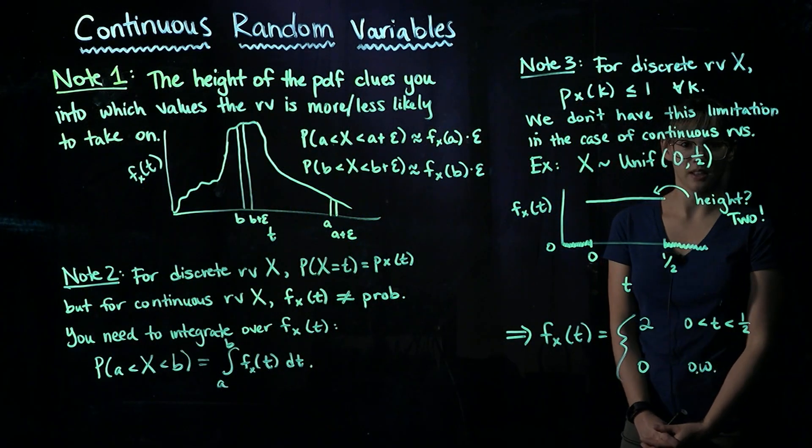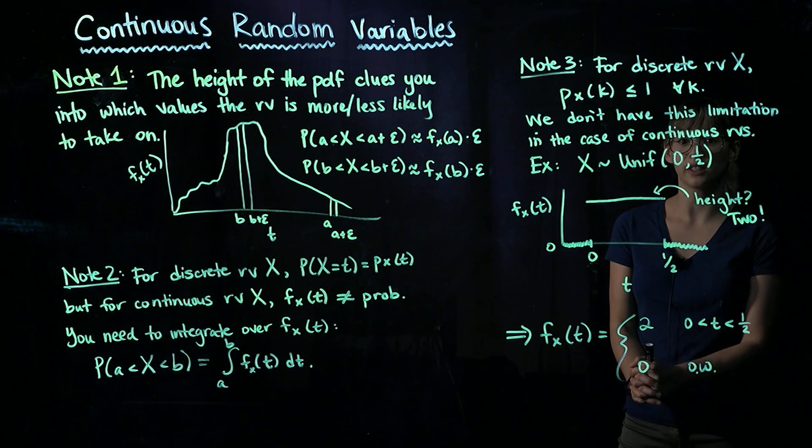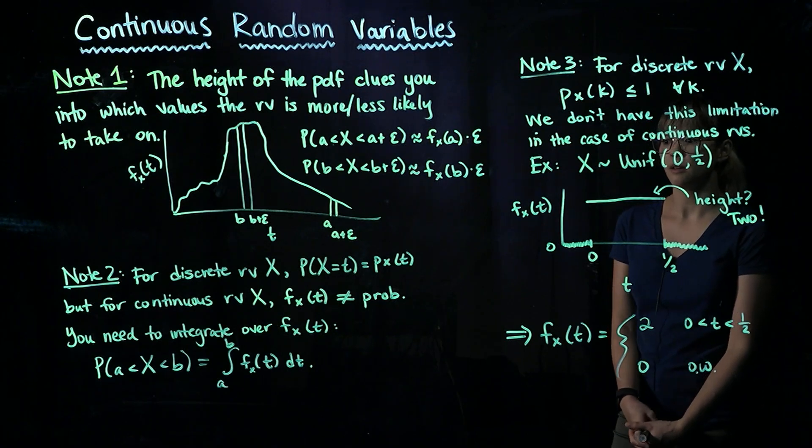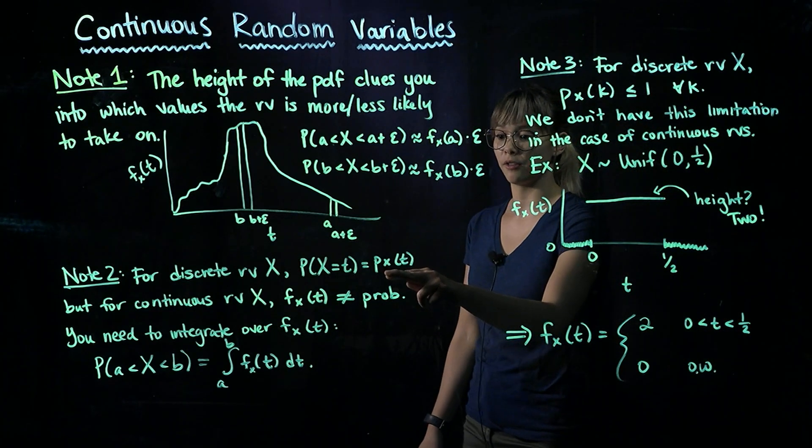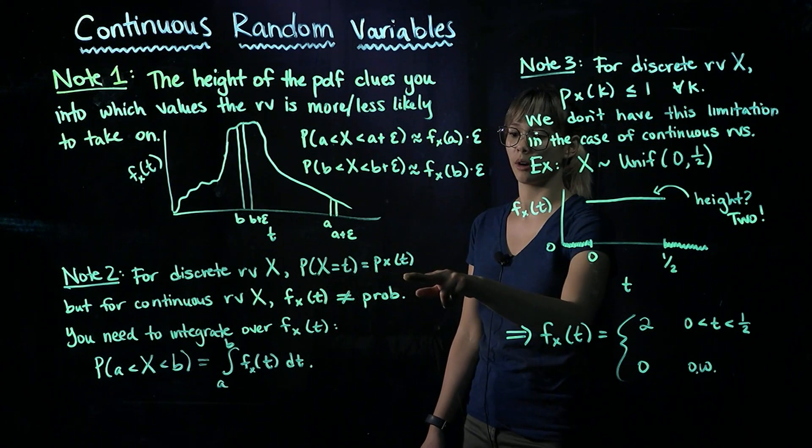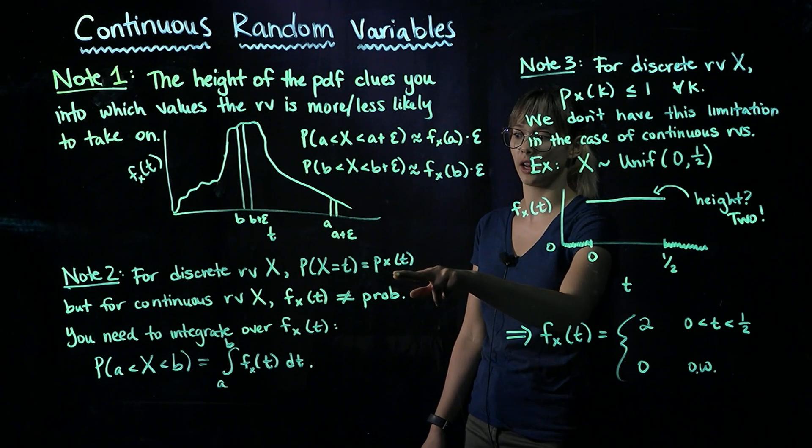Our second note is when we have a discrete random variable X, we can calculate the probability that X is equal to some value T by using the PMF directly. So remember, this was how we wrote our PMF in the discrete case.